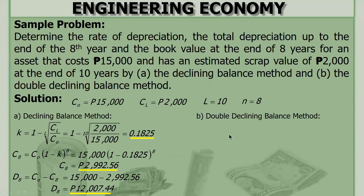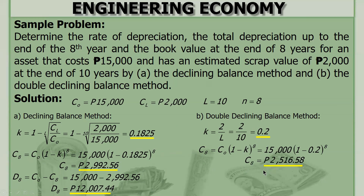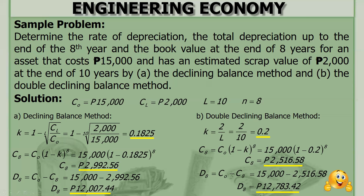For the double declining balance method, K is just equal to 2 over L, which is 2 over 10, giving 0.2. Using the same formulas, compute the book value at year 8, and then the total depreciation. The key difference is only in how K is calculated — the other formulas remain the same.